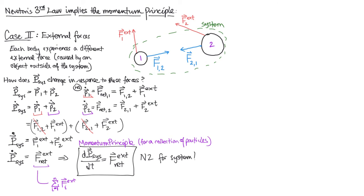We've achieved our goal and reached the punchline. We've proved this for two objects, but you can extend these sums over two objects to sums over n objects and end up in the same place — you can talk about a full system, its total momentum, and how that momentum changes in response to external forces. Another topic we'll get to later is how the center of mass serves as a proxy for the whole system. We can assign a location in space to that imaginary point, talk about its momentum and how it changes, and the relevant point is the center of mass of the system.